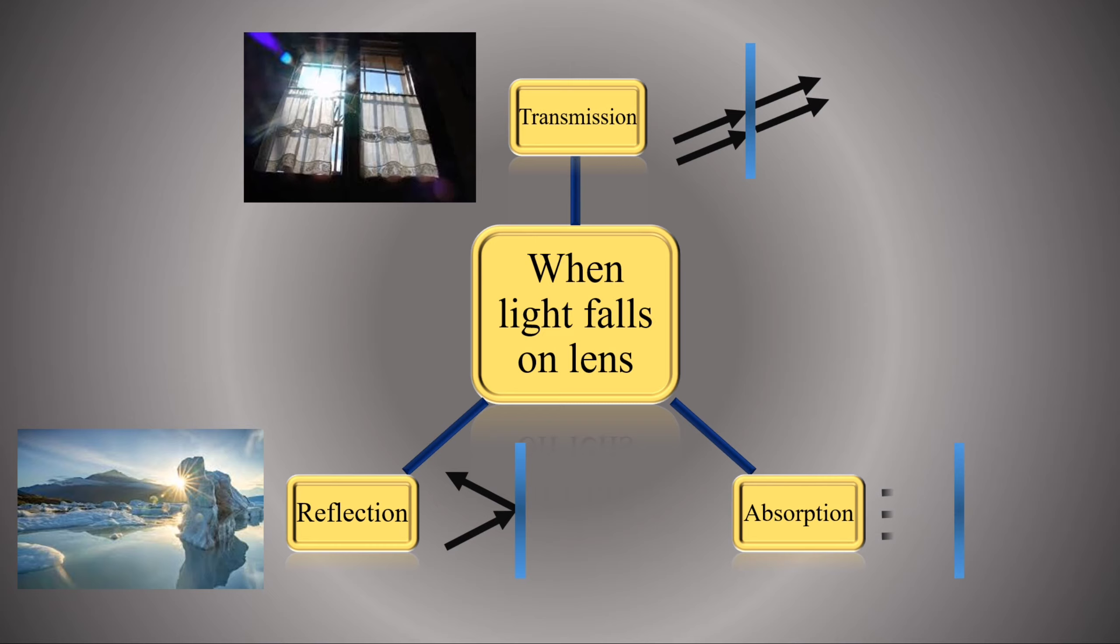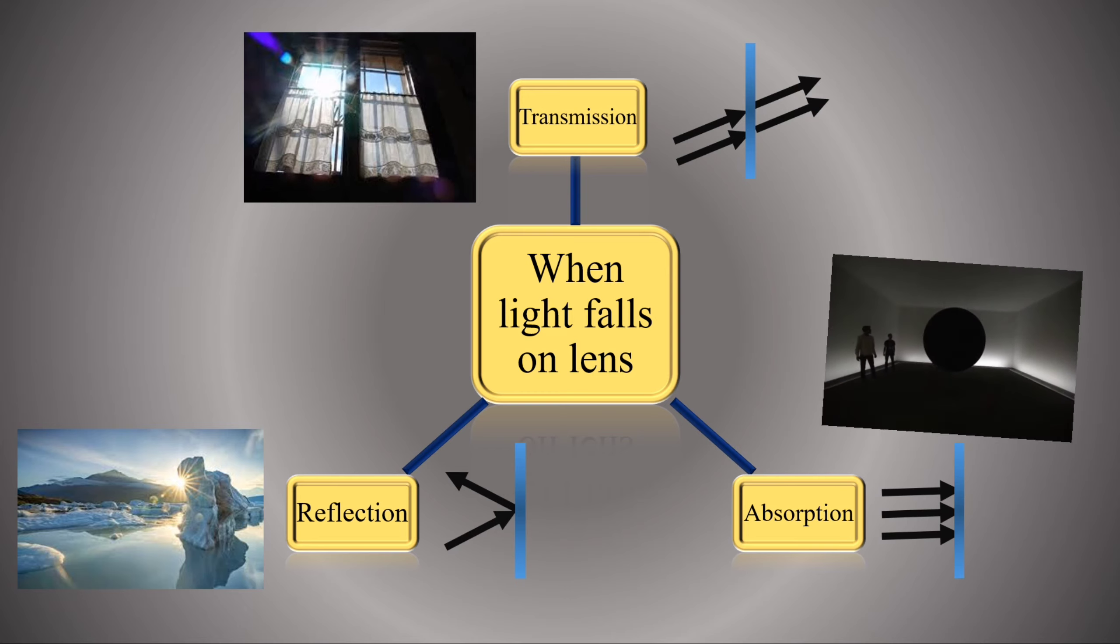Absorption is when light is absorbed by a substance. An example would be when light hits a black material, most of that light is absorbed which makes it heat up. This is why you feel very hot if you wear a black shirt on a sunny summer day. Your shirt is absorbing light which causes it to heat up.